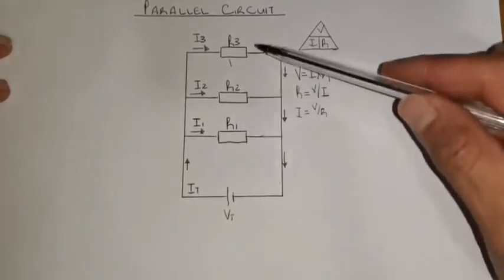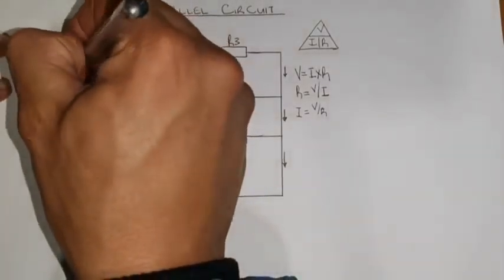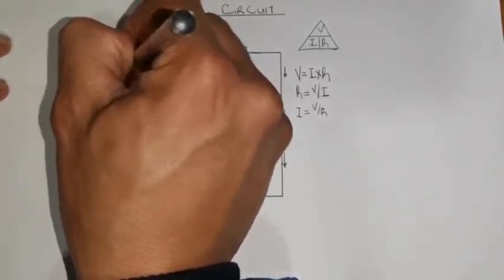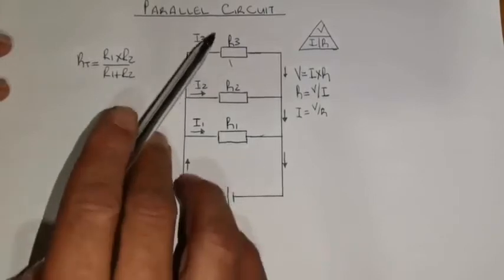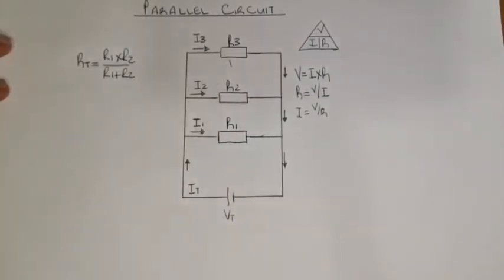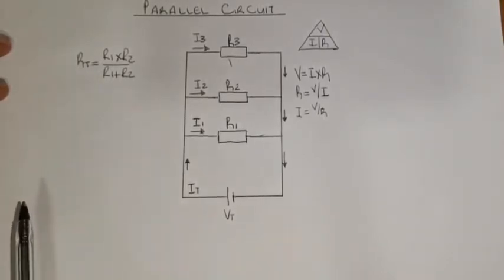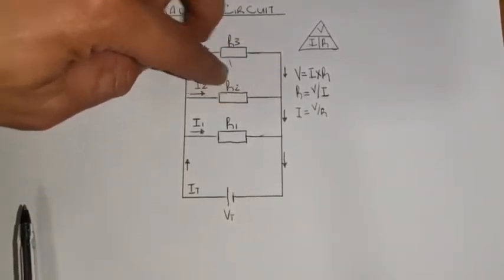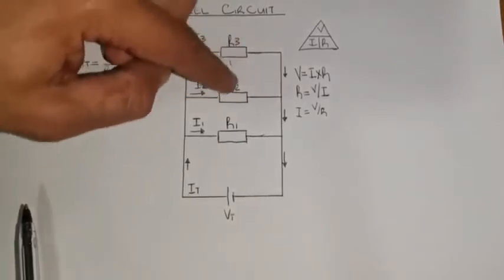Because we have three resistors in parallel here, I'm going to use the formula: R total equals R1 times R2 over R1 plus R2. That is the formula I'm going to use to do the total resistance. Now, because I have three resistors in parallel, I'm going to do the first two first. I'm going to take R3 and R2, put them together, and calculate what is the resistance for these two resistors in parallel.